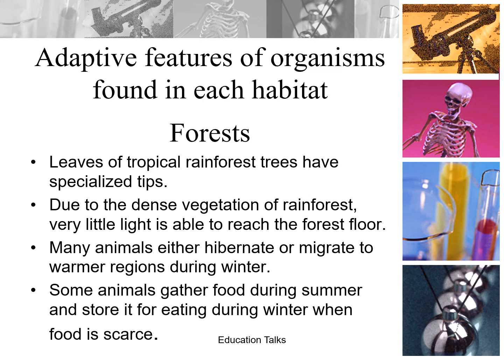Forests: leaves of tropical rainforest trees have specialized tips. Due to the dense vegetation of the rainforest, very little light is available to reach the forest floor, as all the vegetation gives so much shade that light is not able to reach the floor as the leaves absorb it.